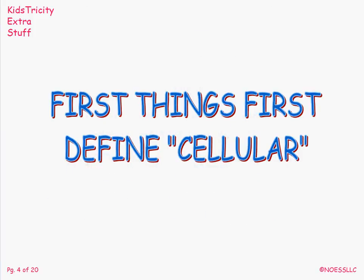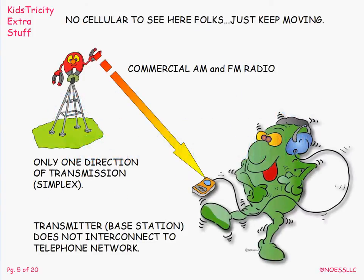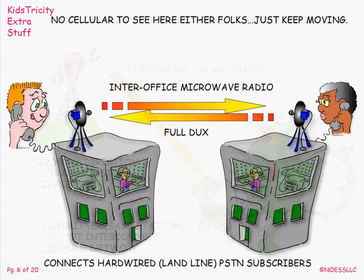First, we need to define 'cellular' — what does that mean? This is NOT cellular: commercial AM/FM radio, for example, has a big high-powered transmitter that sends out to a listener who is just receiving music. It's not cellular telephony because there are no phones involved, it doesn't connect to the telephone network, and you can't talk back. It's one-direction simplex — this guy can send, but the other guy can't do anything.